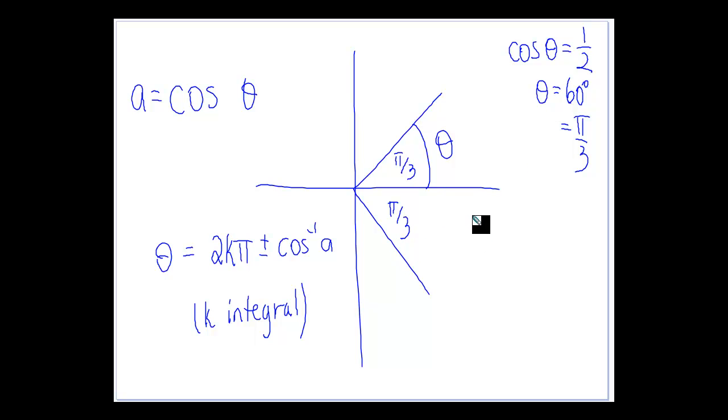So the idea here is that the general solution for θ would be 2kπ, because every time that'll give us an even number times π that puts us on the positive x-axis, and then we're going to add or subtract that π/3 which is going to be our related angle.